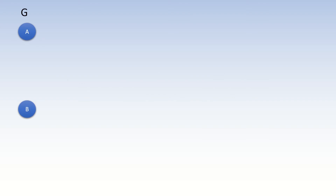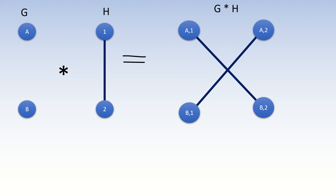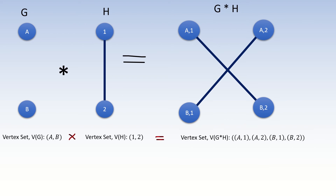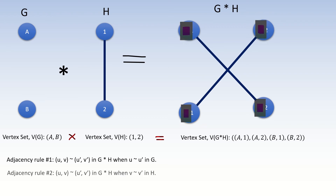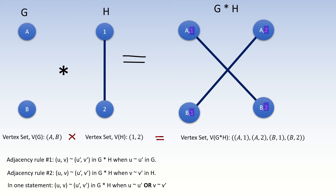To recap, the conormal product of two graphs G and H is itself a graph with a vertex set equal to the Cartesian product of the vertex sets of G and H. Two vertices are adjacent in the conormal product of G and H if they meet at least one of the following conditions: their left entries are adjacent in graph G, or their right entries are adjacent in graph H. In other words, if the left entries are adjacent or the right entries are adjacent, then the vertices are adjacent in the conormal product.